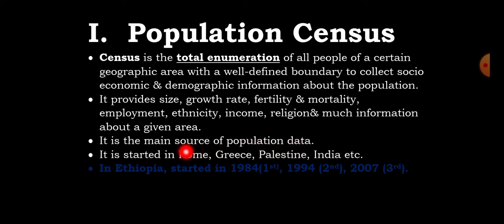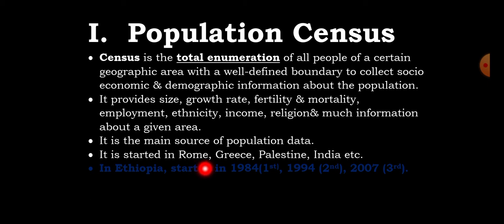Population census started in Rome, Greece, Palestine, India, and other places. In Ethiopia, the population census started in 1984 for the first time, 1994 for the second time, and 2007 for the third time.